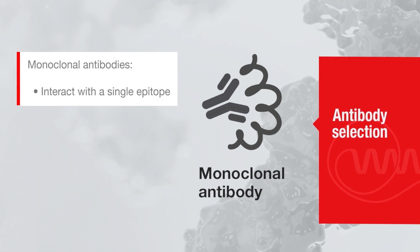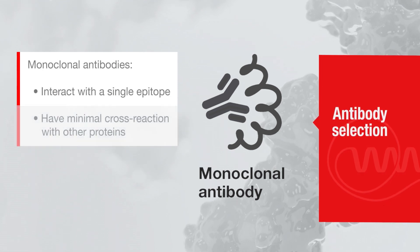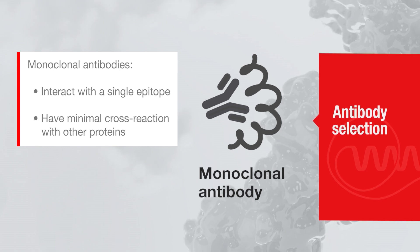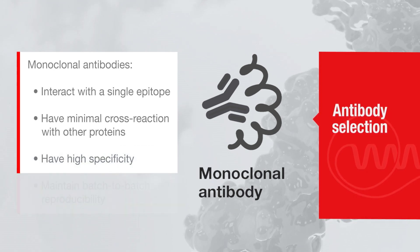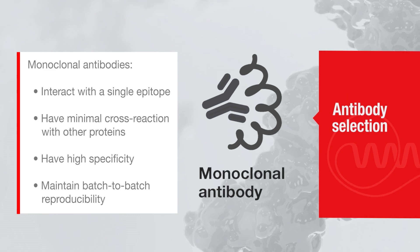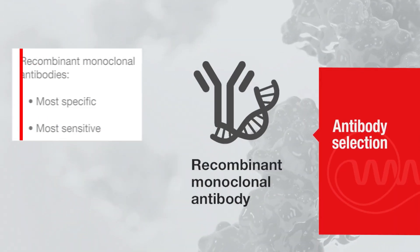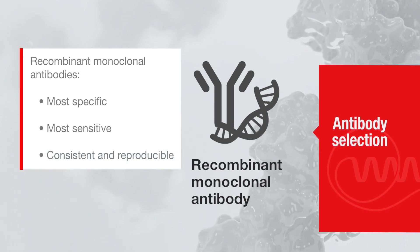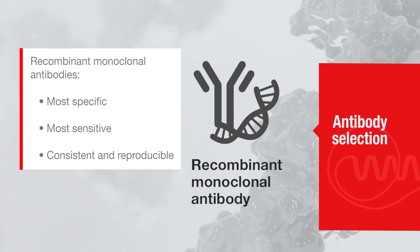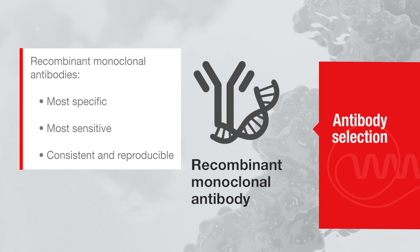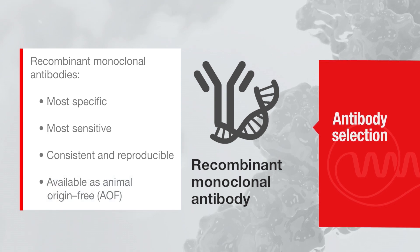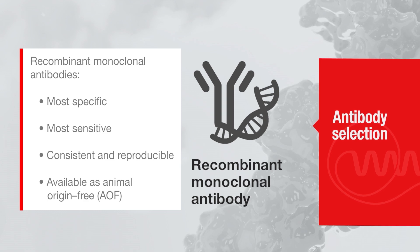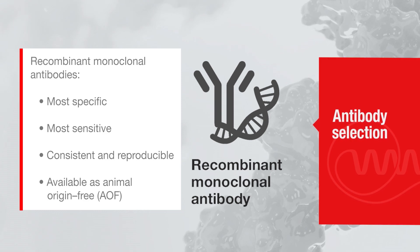Monoclonal antibodies interact with a single epitope on the target protein and are less likely to cross-react with other proteins, which is why they are considered more specific. They also offer batch-to-batch reproducibility. Recombinant monoclonal antibodies are a third type of antibody produced using in vitro cloning. They are widely considered to be the most specific and sensitive amongst other types of antibodies. These antibodies offer consistent, reproducible results and are less prone to batch-to-batch variability. Animal-free recombinant antibodies eliminate the risk of contamination associated with animal and human serum-derived media components.